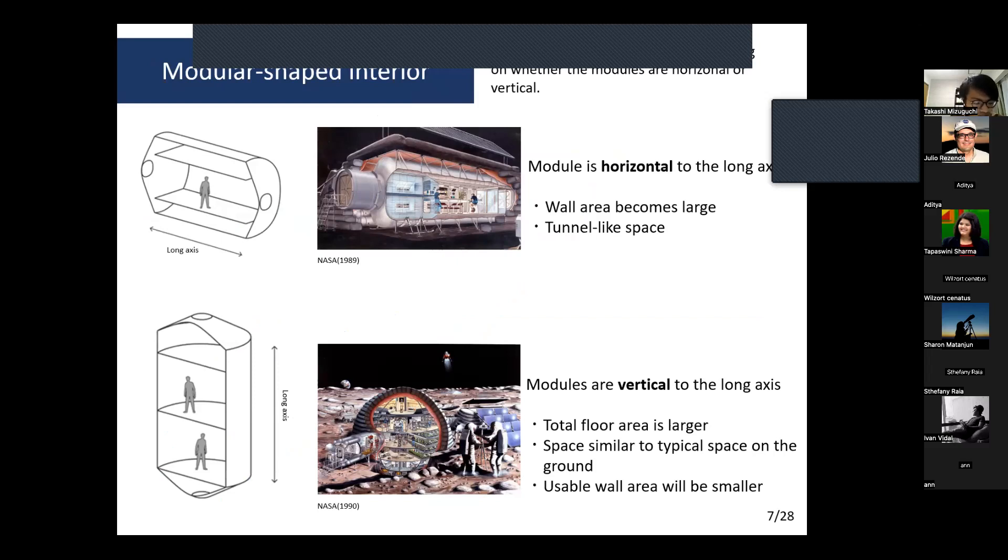For lunar base interiors, internal floor arrangements change depending on whether the modules are horizontal or vertical. When the module is horizontal, wall area becomes large and the space is tunnel-like. When the module is vertical to the long axis, total floor area is larger and usable wall area will be smaller.